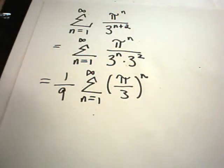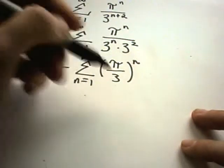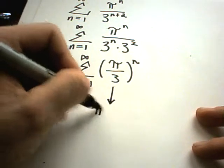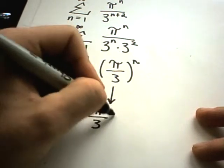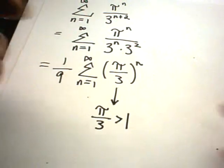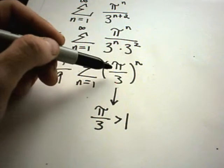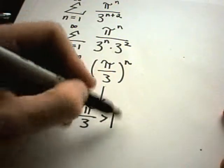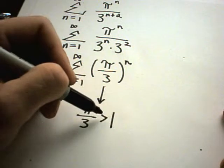Does this converge or diverge? Well, we have to think about our common ratio. Definitely pi over 3 is bigger than 1. And remember, our common ratio inside of here has to be between negative 1 and positive 1 to converge.